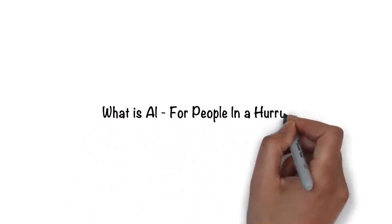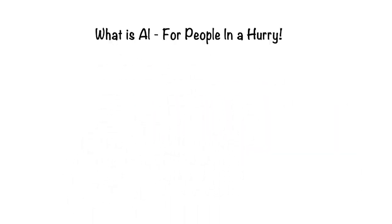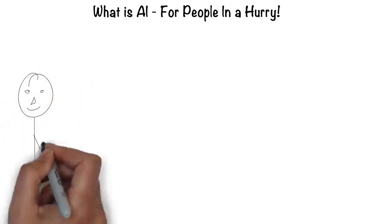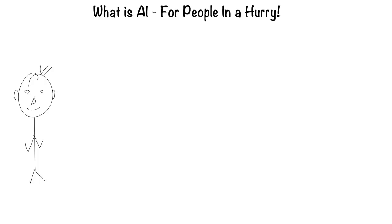Artificial intelligence for people in a hurry. The easiest way to think about artificial intelligence is in the context of a human. After all, humans are the most intelligent creatures we know of.